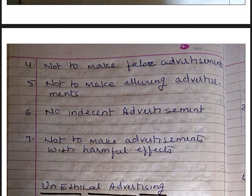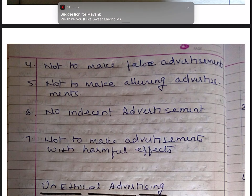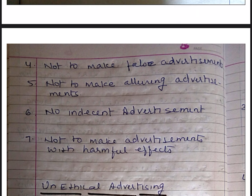Fifth, not to make alluring advertisements. Many advertisements give alluring messages and break the rules of ethical advertising. There are many advertisements in the market which try to allure the buyer, like claiming 100% discount. These messages are misleading and unethical on the part of advertisers. Sixth, not to make any indecent advertisement. Use of indecent advertisements or vulgar pictures is also against the ethics of advertising. It hurts the feelings of the general public and creates bad qualities in society.